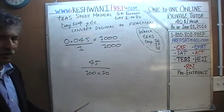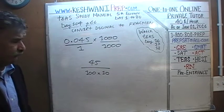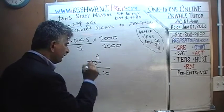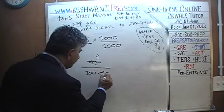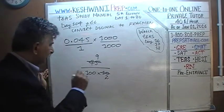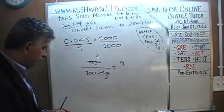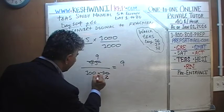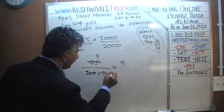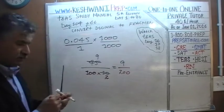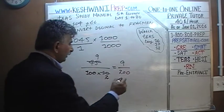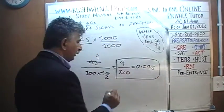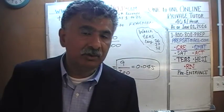Let's divide top and bottom by 5. 45 is made up of nine 5s — nine 5s are 45. And 10 is made up of two 5s. So on top we end up with 9, and on the bottom we end up with 2 times 100, which is 200. That's our answer: 0.045 expressed as a fraction equals 9 over 200.